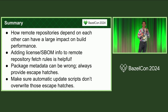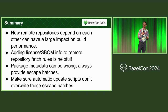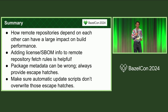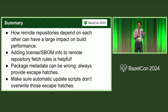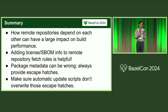In summary, when writing repository rules, you have to think very carefully about how one repository depends on another, because unnecessary dependencies can really impact build analysis time negatively — try not to depend on other repositories when generating a repository. Adding license metadata is really helpful. Provide an escape hatch, because sometimes you guess wrong about what the license is or other things about a package. And don't blow away those escape hatches when you automatically update things. I encourage you to look at the rules if you find them useful. Thanks.